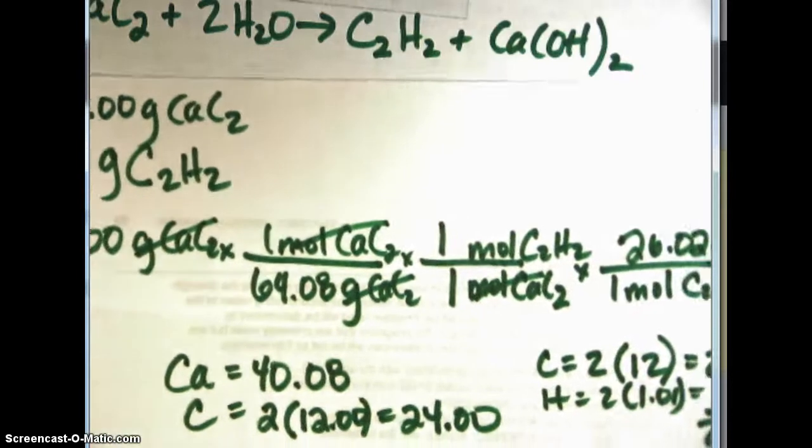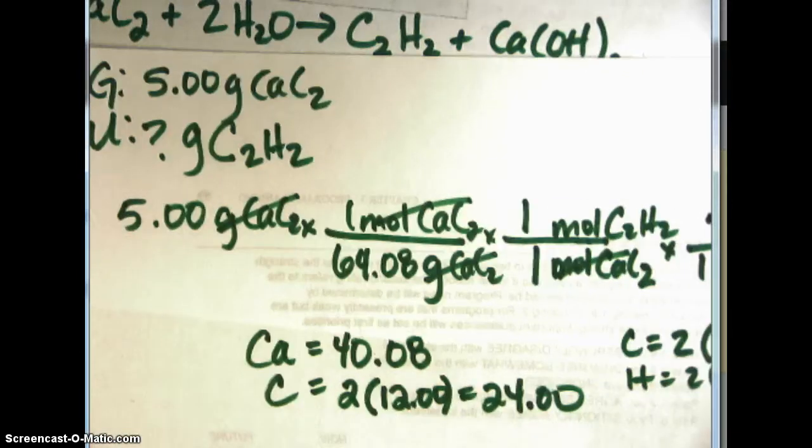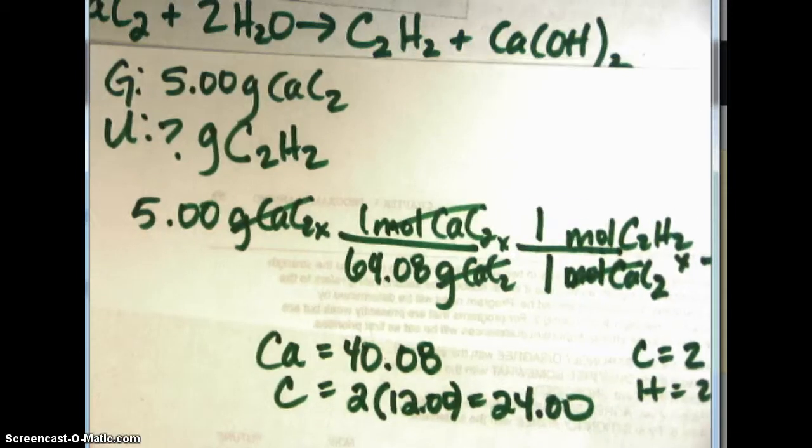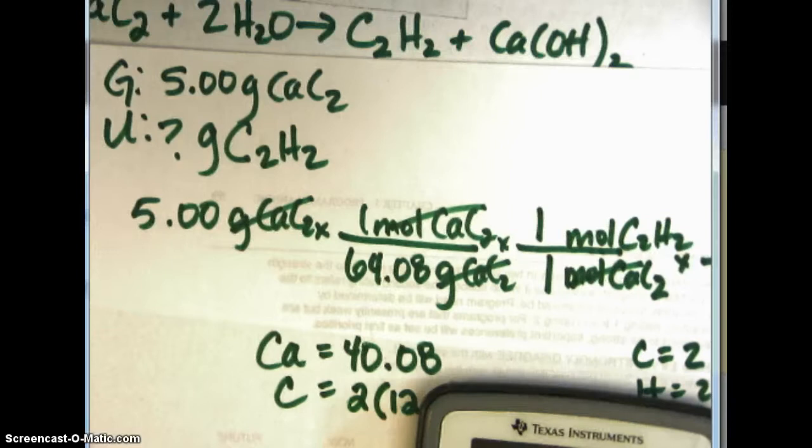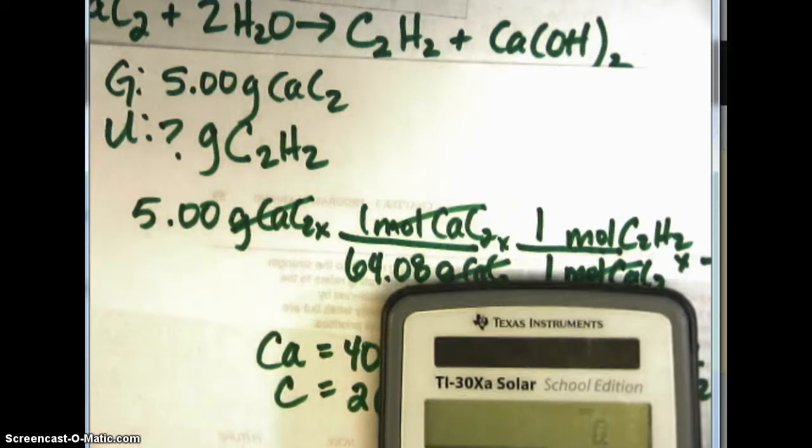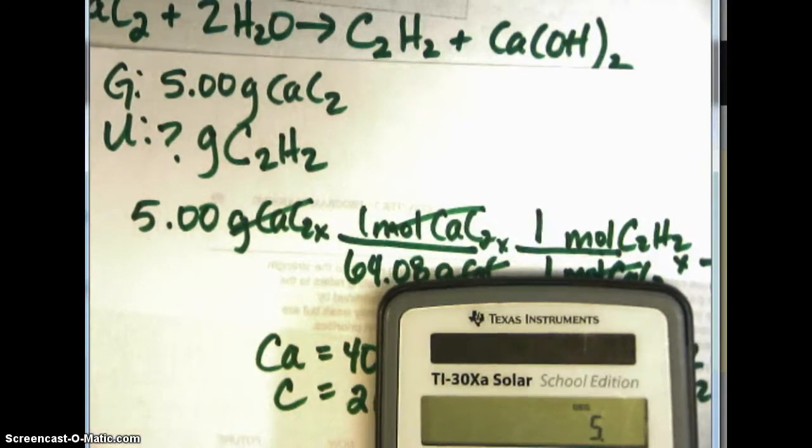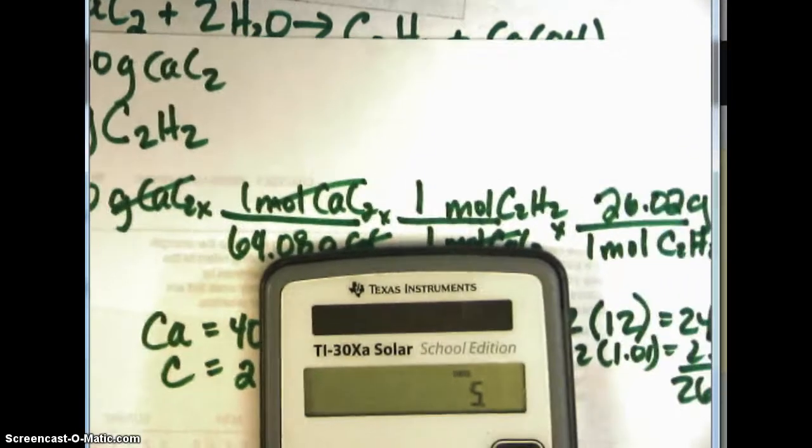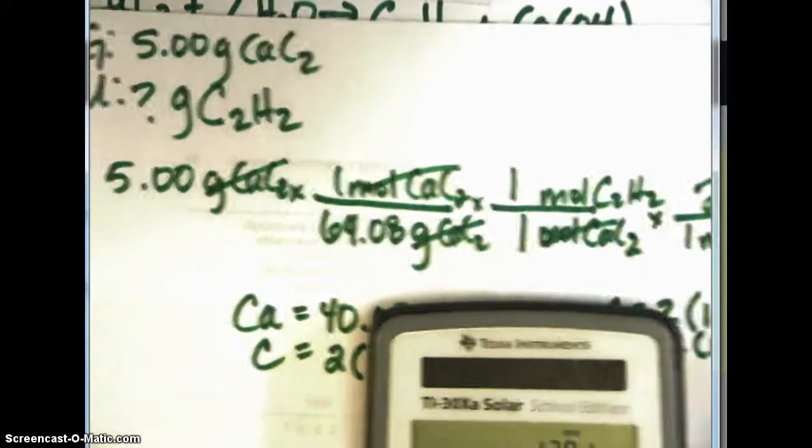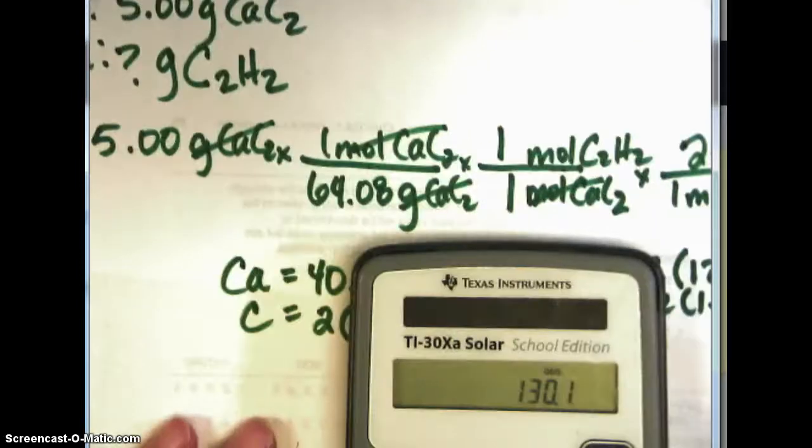So I'm going to multiply everything on the top so I'm going to take 5 times 26.02 equals and then I'm going to divide it by everything on the bottom in this case it's just 64.08.